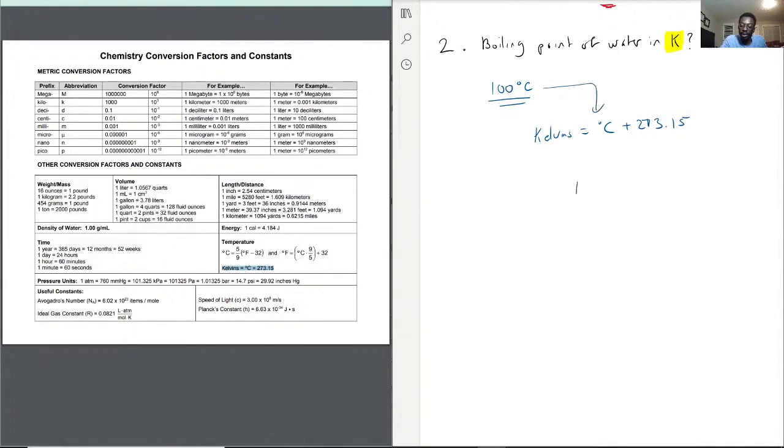Alright, so now we have 100 plus 273.15. Okay, so that means that the Kelvin amount for boiling point of water would be 373.15 Kelvin. That is our answer for the boiling point of water in Kelvin. That's what the K stands for.